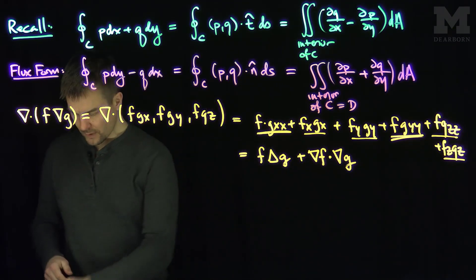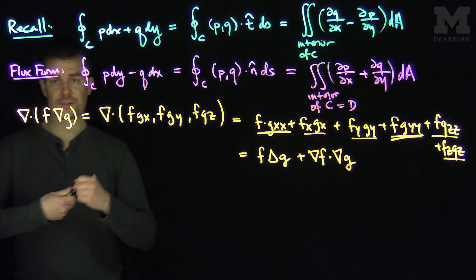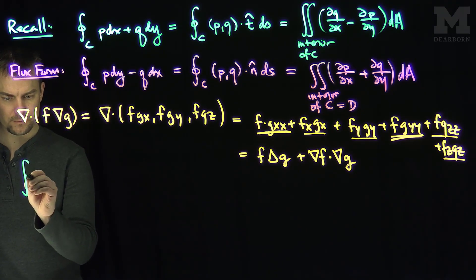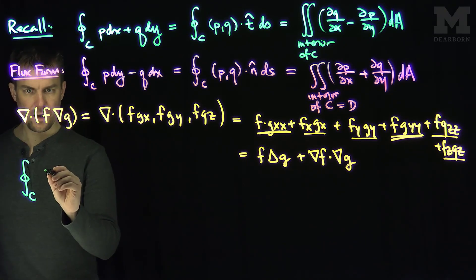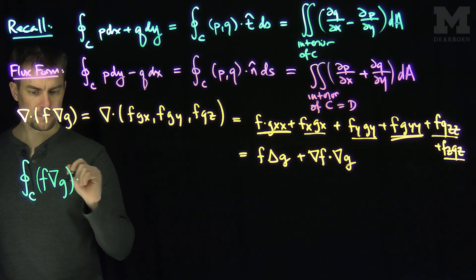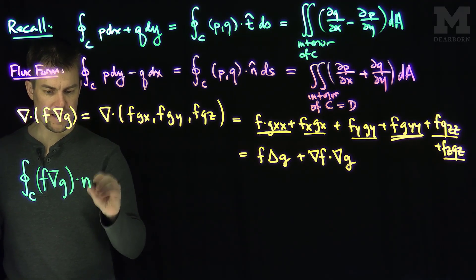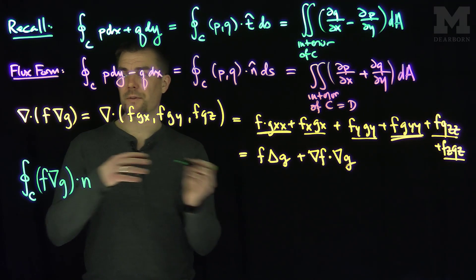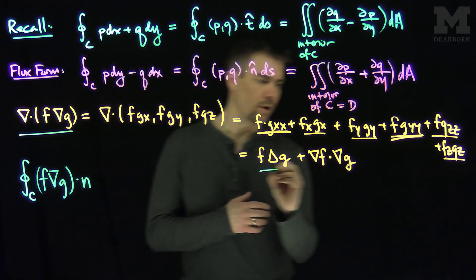So I'm gonna use the fact that the divergence of f gradient g is f Laplacian g plus the gradient of f dot the gradient of g. Good. And so now we're ready to apply Green's Theorem. So what I wanna do now is let's compute the flux of f gradient g, so that's my vector field dot n hat d sigma.